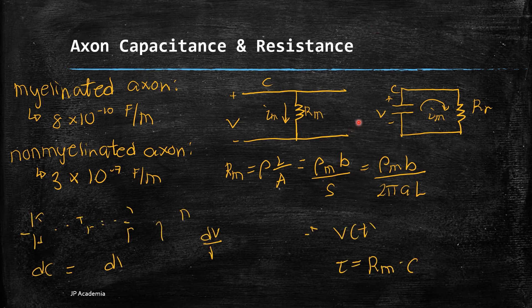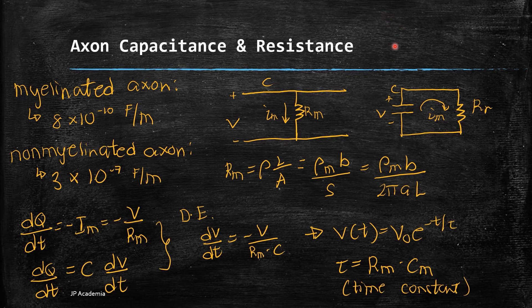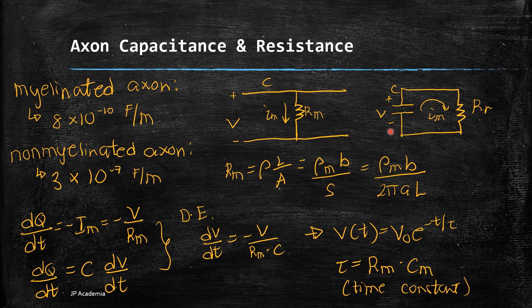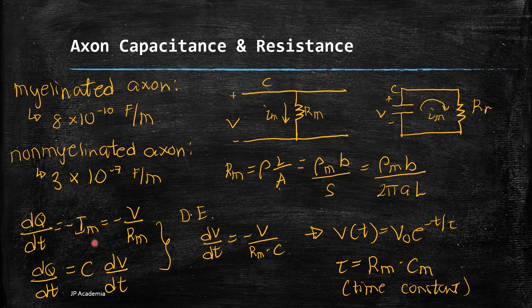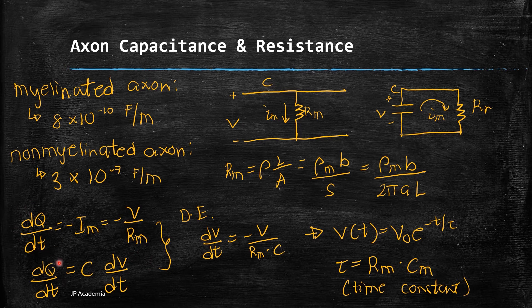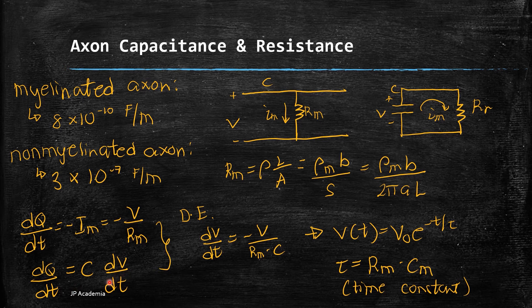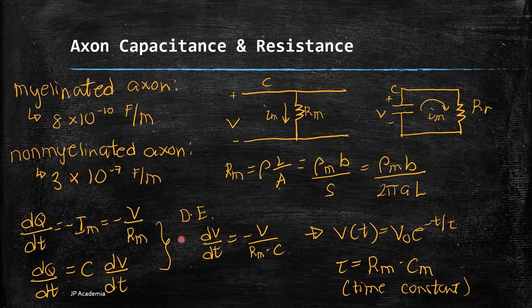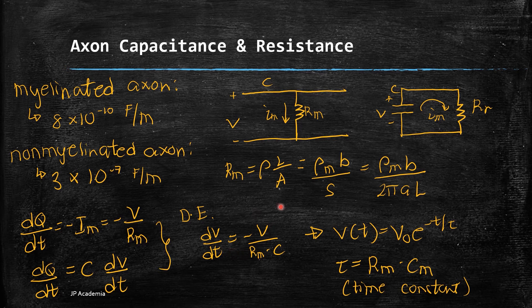The leakage current I_M discharges the capacitor and can be expressed as follows. The change in charge as a function of time, dQ/dt = -I_M, and by Ohm's law, this is also equal to -V/R_M. We can also express this change in charge as dQ/dt = C dV/dt. Therefore, using these two expressions, we can have this differential equation: dV/dt = -V/(R_M × C).